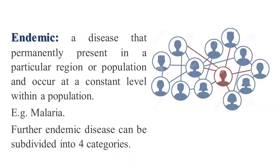Endemic disease is a disease that is permanently present in a particular region or population and occurs at a constant level within that population. For example, malaria. Endemic disease can further be subdivided into four groups.